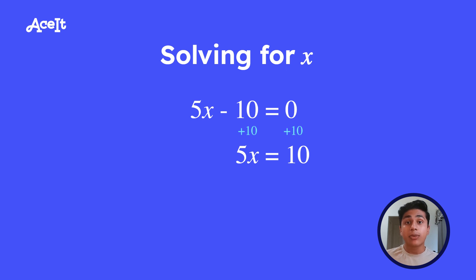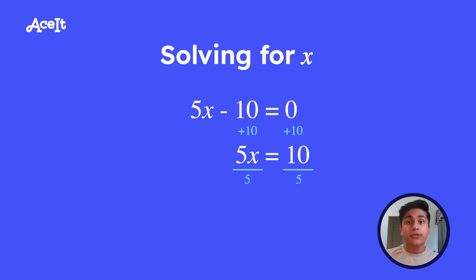Now, to get rid of that 5 and get x by itself, we're going to divide by 5 on both sides, since it's 5 multiplied by x. So we'll be left with x equals 10 over 5, or x equals 2.